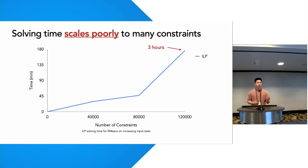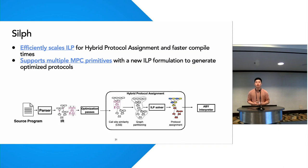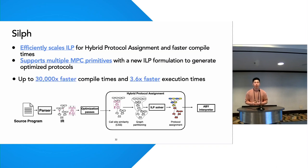To illustrate the scaling problem, this graph shows ILP solving times scaling poorly with the number of constraints. The x-axis shows the number of constraints as we scale up computation, and the y-axis shows solving time in minutes. As we scale up to around 100,000 constraints, the solving time grows to around three hours. Our fundamental challenge is how to build a compiler that can efficiently and scalably generate optimized hybrid MPC protocols. Our system provides techniques to efficiently scale ILP for hybrid protocol assignment, supporting multiple MPC primitives. Our key results show up to 30,000 times faster compile times and up to 3.6 times faster execution times compared to other hybrid MPC compilers.